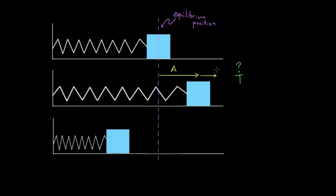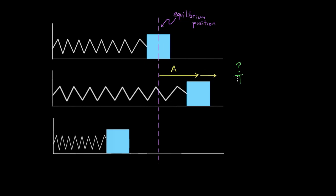Some of you might say yes, it should increase the period — because now the mass has farther to travel. Instead of traveling through a small distance back and forth, it's got to travel through a larger distance back and forth. Since it has farther to travel, the period should increase.